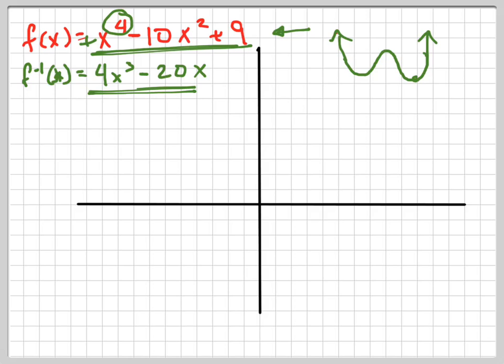They don't actually want us to find the actual values of these things. They just want us to say where it's increasing and decreasing. So in those sections, it would be decreasing. Those are my decreasing sections. And in these pink sections, it would be increasing.